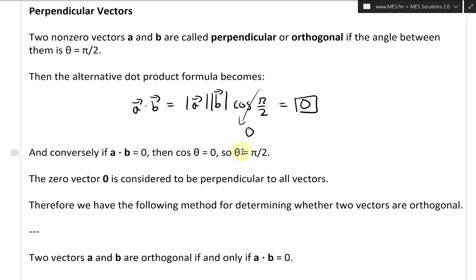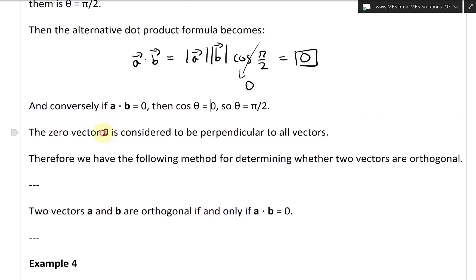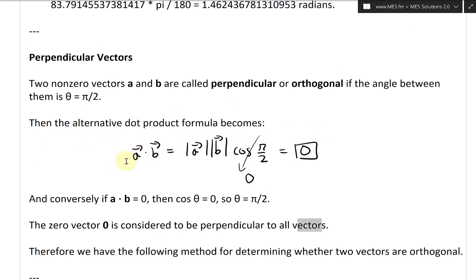So then the angle can be theta equal to pi over two. The zero vector, this right here, zero vector is considered to be perpendicular to all vectors.